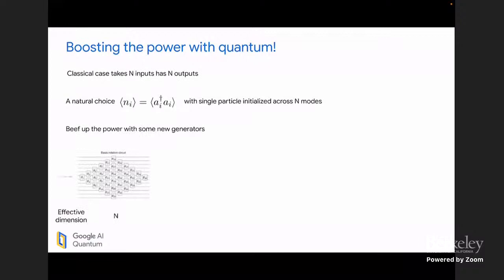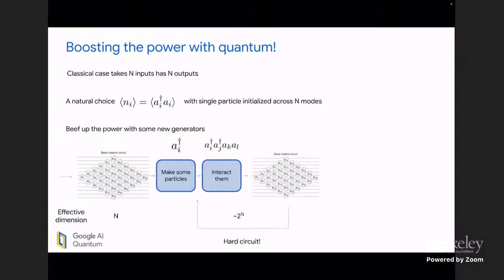So I'd like to boost the power with quantum since I already have this great, efficient reference point, and I know I can add quantum things to it to make it more and more powerful. So the classical case has N inputs and N outputs. And a natural choice, since we're talking about chemistry, is to just use these fermionic application modes. And since especially these efficient unitary neural networks are exactly single particle fermionic rotations. And I'm going to beef up the power of quantum with some new generators. So here's the circuit that I had. Here's the effective dimension at the bottom. So right now it's just Hartree-Fock. Everything's kind of rotating in just N dimensions. All the rest of my states aren't that important. But now I'm going to add some particles. I'm going to interact them. I'm going to loop this construction many, many times. I'm going to make this a very hard circuit. It can probably do arbitrary computation.